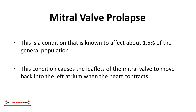A very common condition is called mitral valve prolapse, known to affect about 1.5% of the general population. This condition causes the leaflets of the mitral valve to move back into the left atrium when the heart contracts, and often makes the valve tissues stretchy, causing the valve to leak. Normally, this does not require treatment unless there are other complications. Other contributors include sexually transmitted diseases such as syphilis, high blood pressure, and many types of drugs, both prescribed, over-the-counter, and illicit.